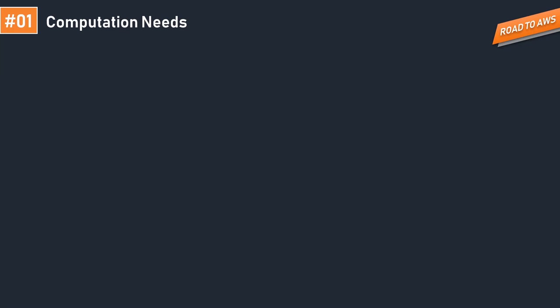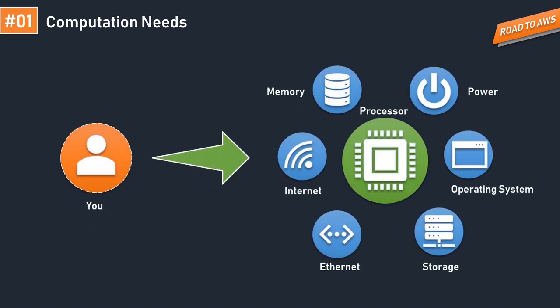Before jumping into the EC2 part, let's understand why there was a need for Elastic Compute. Let's suppose I'm a software developer, a game designer, or I work in industrial machine designing. The workload and compute power needed differ from person to person and profession to profession. A simple configuration might have a CPU, GPU, 1TB hard drive, 8GB RAM, and Ethernet and Wi-Fi — all as an on-premise computation powerhouse.